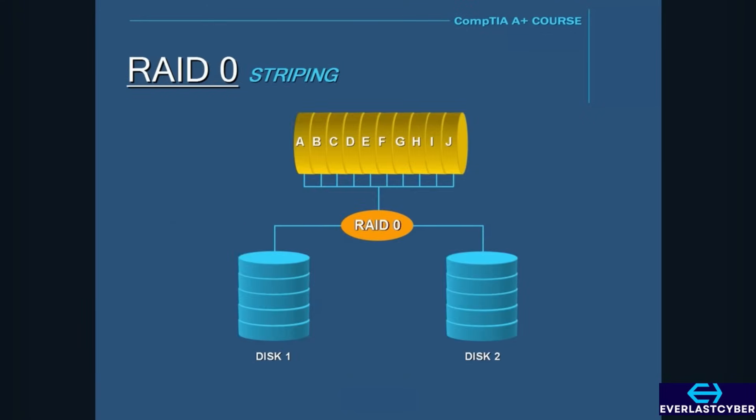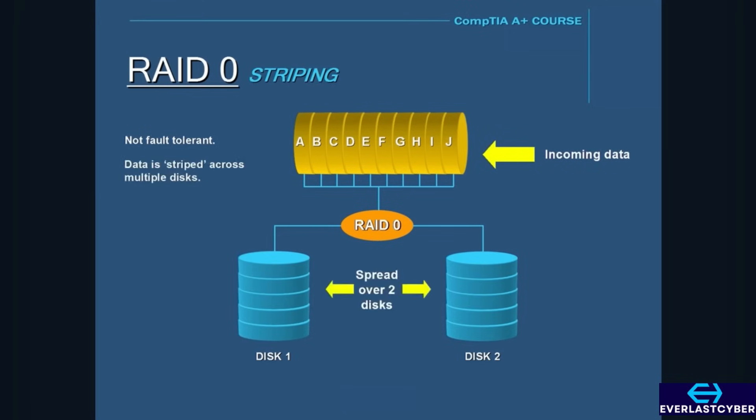RAID 0 is not fault tolerant. RAID 0 shouldn't even be called RAID, because not only does it not provide fault tolerance, it actually increases the chance for data loss. In a RAID 0, the data is not duplicated, but it is actually spread or striped across two separate disks.